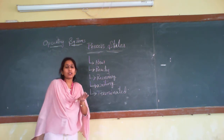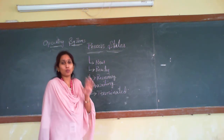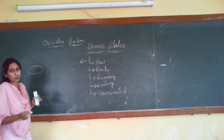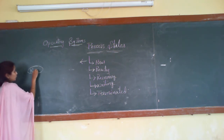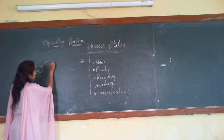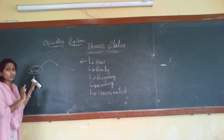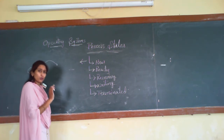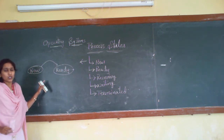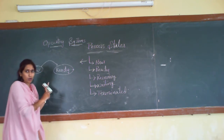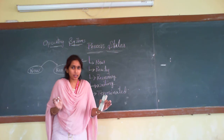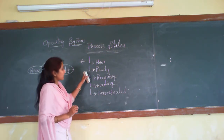When we discuss the new state, a process has just been created — it is about to be created, not yet ready for execution. Next, the ready state: whatever processes have been created are ready for execution. All processes are scheduled in one place and they are ready for execution.